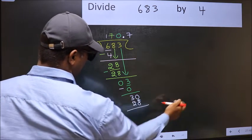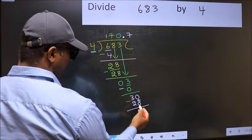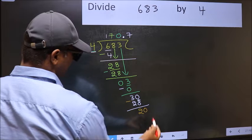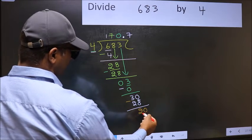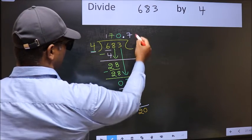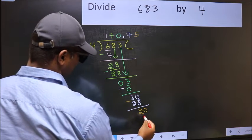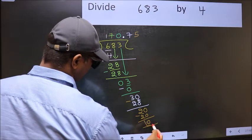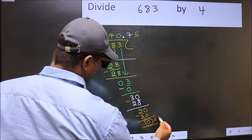Now you should subtract: 30 minus 28 is 2. We already have a decimal, so directly take 0. When do we get 20 in the 4 table? 4 fives is 20. Now you subtract, you get 0. So this is our remainder.